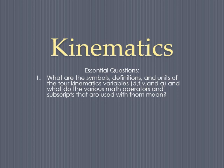Number one, what are the symbols, definitions, and units of the main four kinematics variables, which in my mind are distance, time, velocity, and acceleration, and what do the various math operators and subscripts that are used with them mean? You've probably been exposed a little bit to subscripts and operators. They're heavily used in physics to try to give a little bit more physical meaning to the variables that we use.